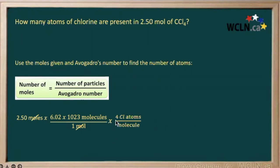So now we need to multiply that by 4, because as we can see here from our formula, we have 4 molecules of chlorine in each molecule of our carbon tetrachloride. So again, we can cross out our units here, and we'll be left with the number of atoms.